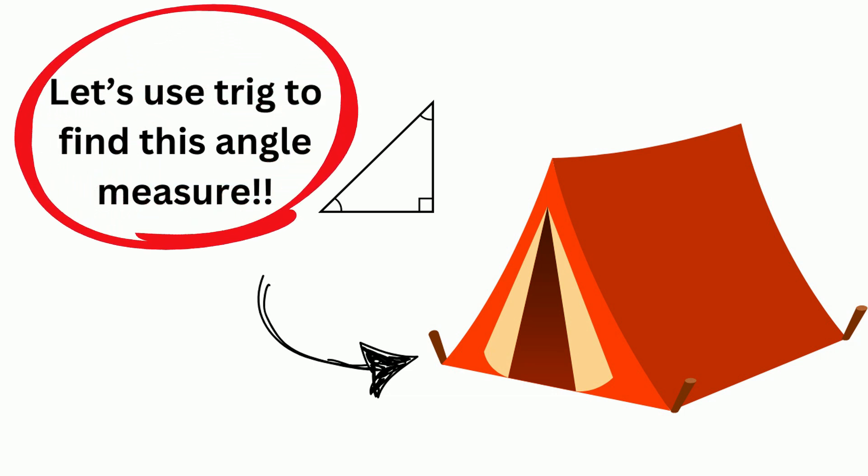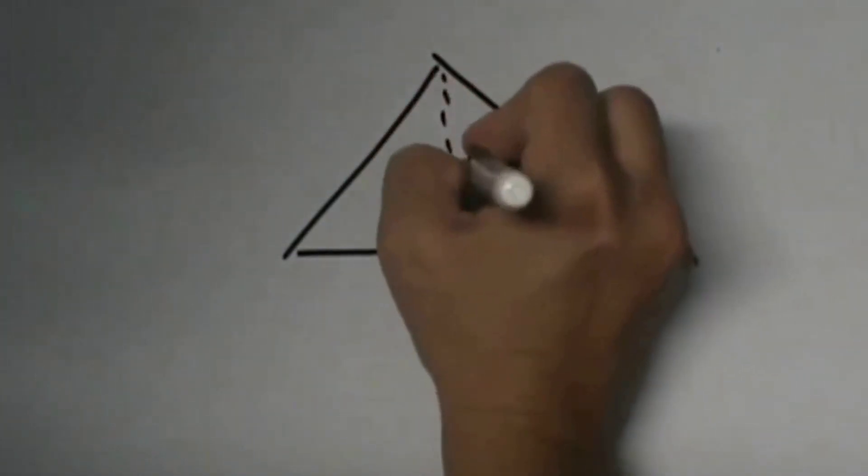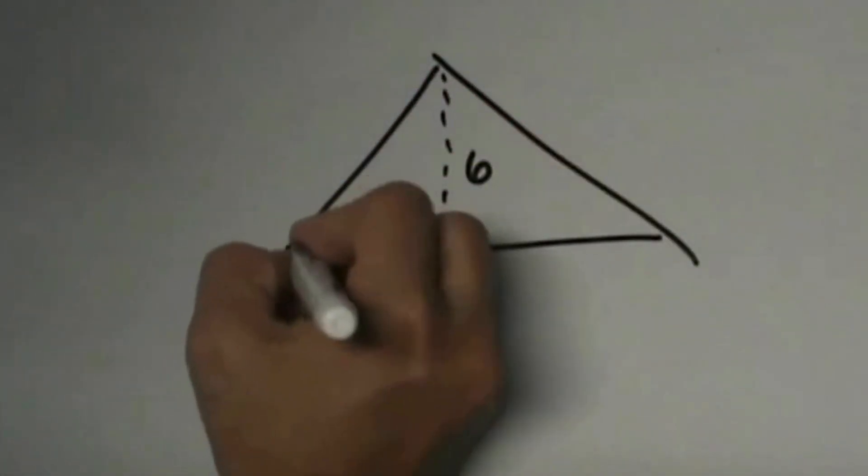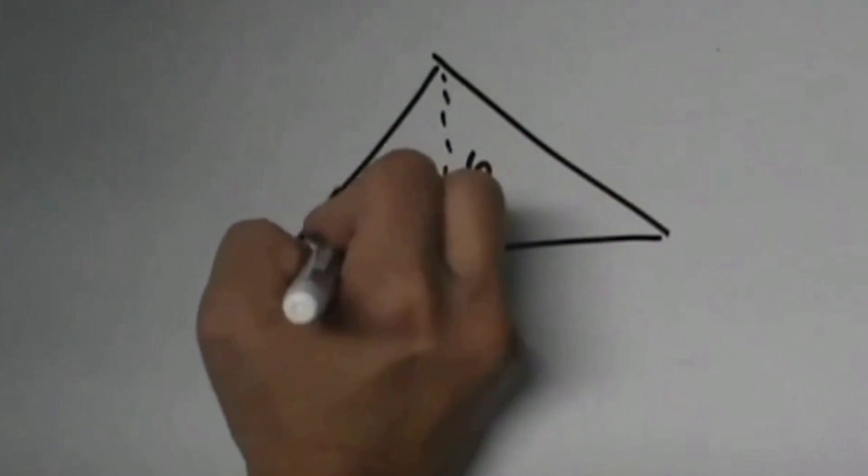So here is our tent. This measurement is 10, the pole is 6, and we are looking for the angle that the tent makes with the ground. So here is our tent and here is the ground, so that is our angle.